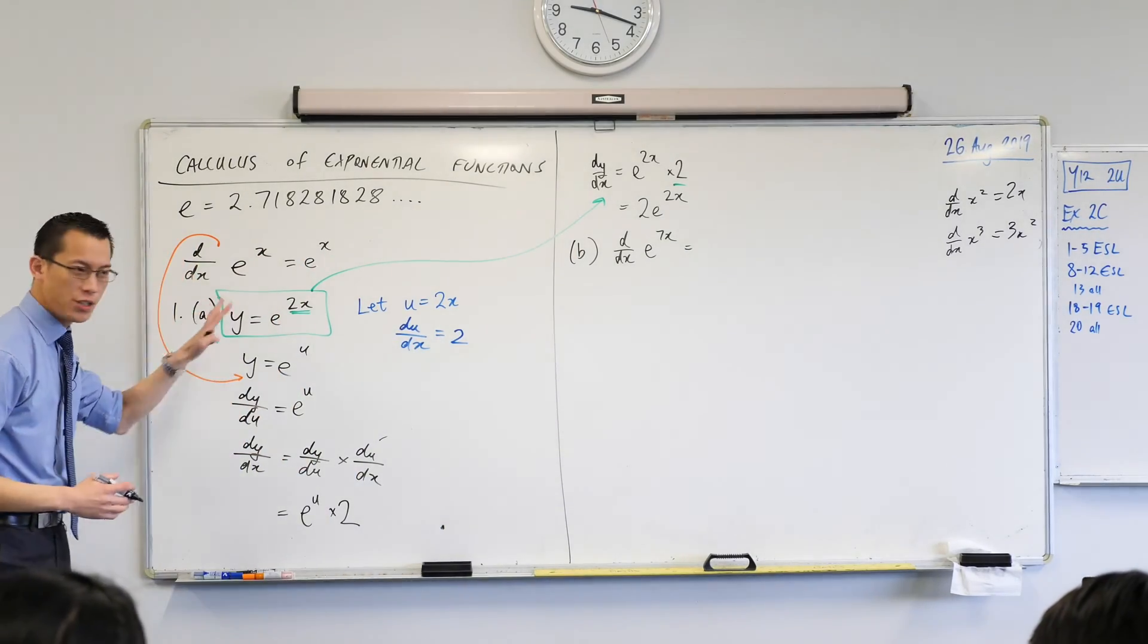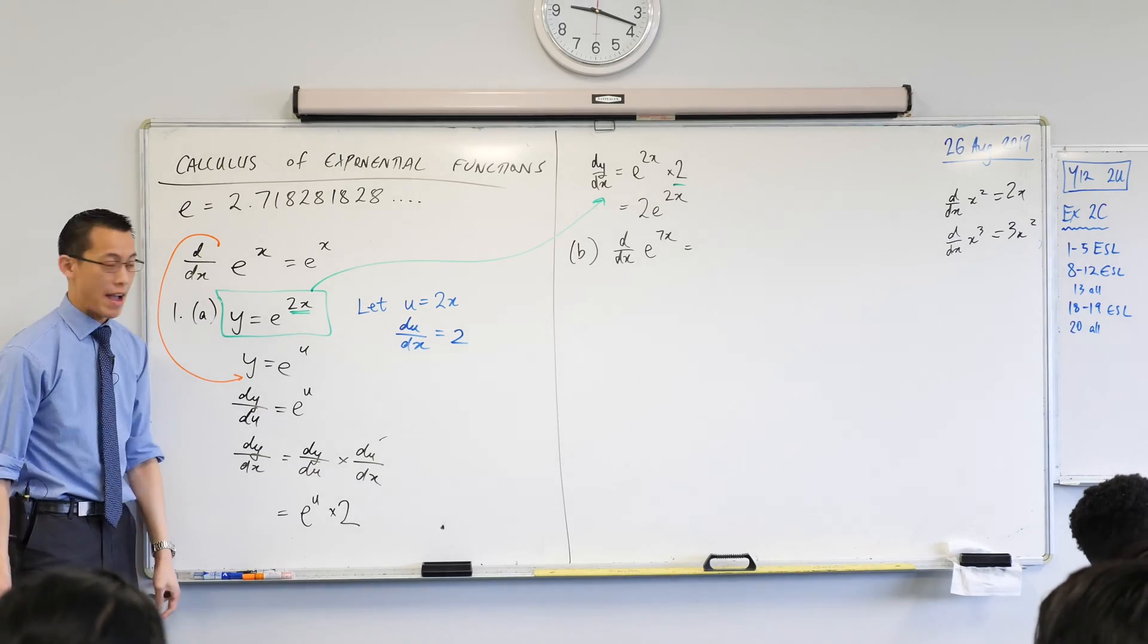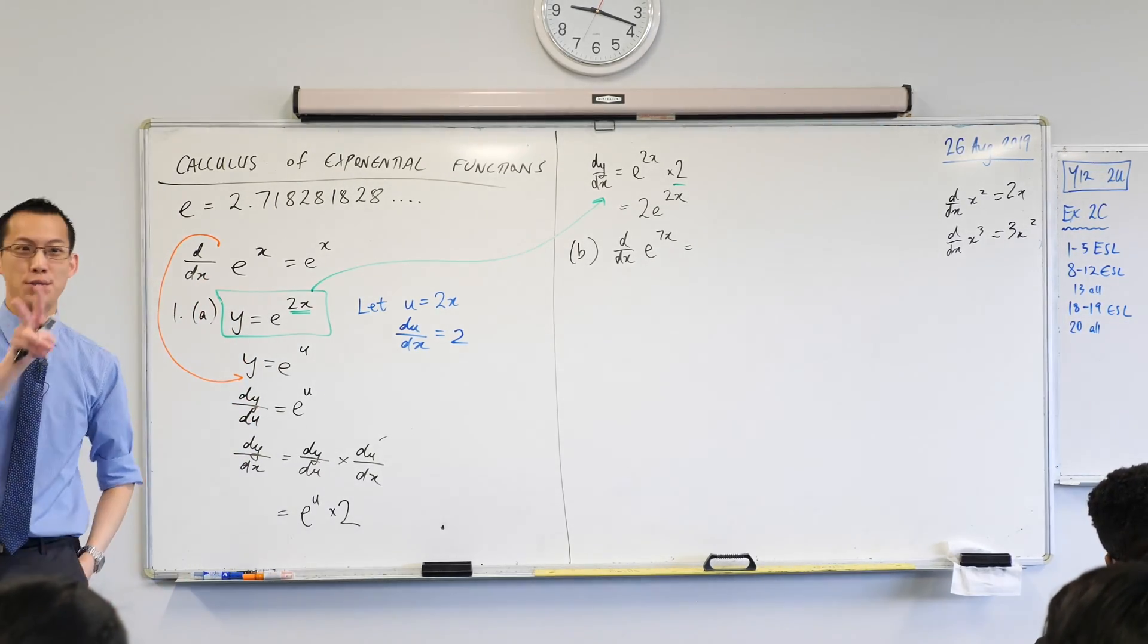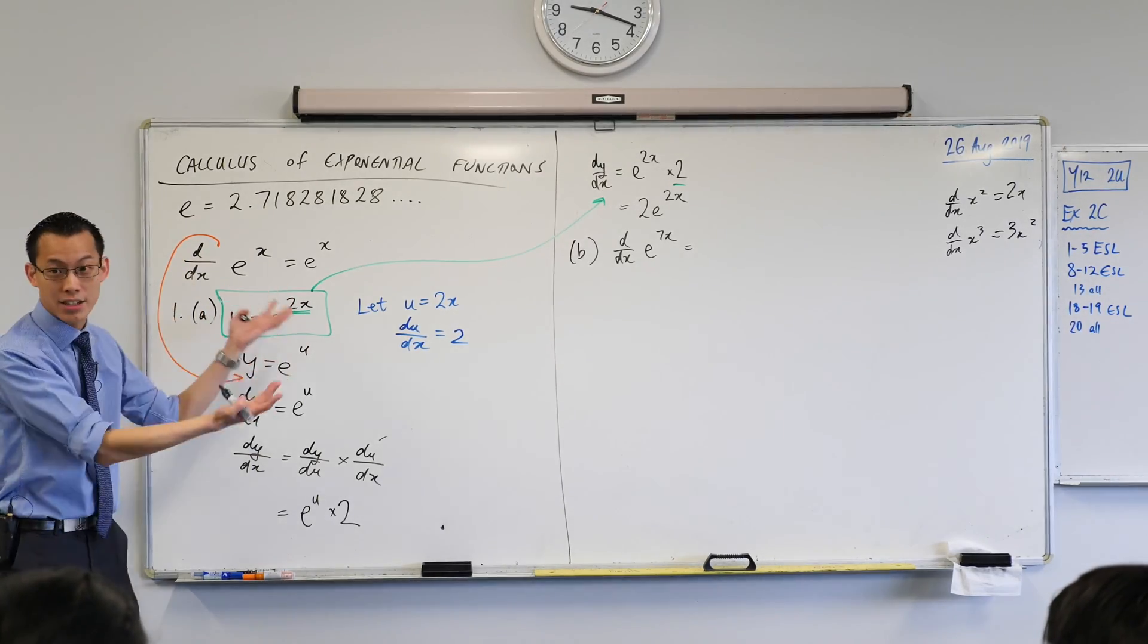Some of you are already there which is fantastic and you didn't take the long way around which is great. If I wanted to take the long way around I would write everything that I did for A but instead of twos you're going to replace them all with sevens and it's literally identical.